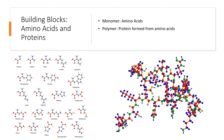We also have amino acids and proteins. We have 20 different amino acids, and these can combine in all sorts of permutations to produce proteins that vary widely in size, shape, and function.